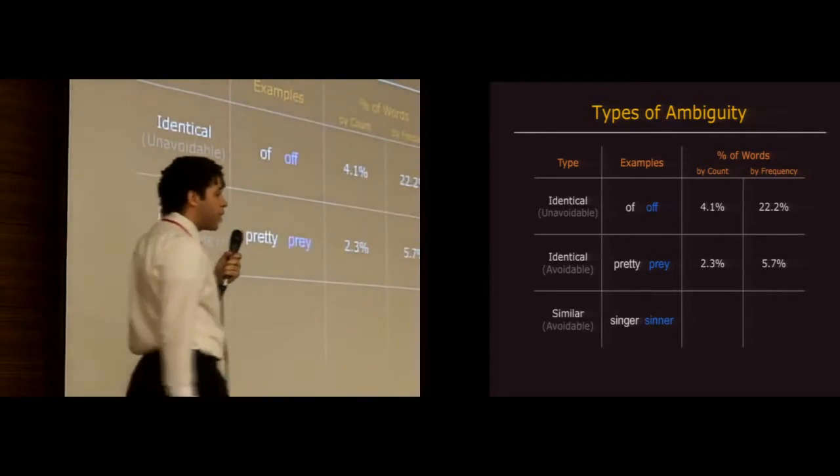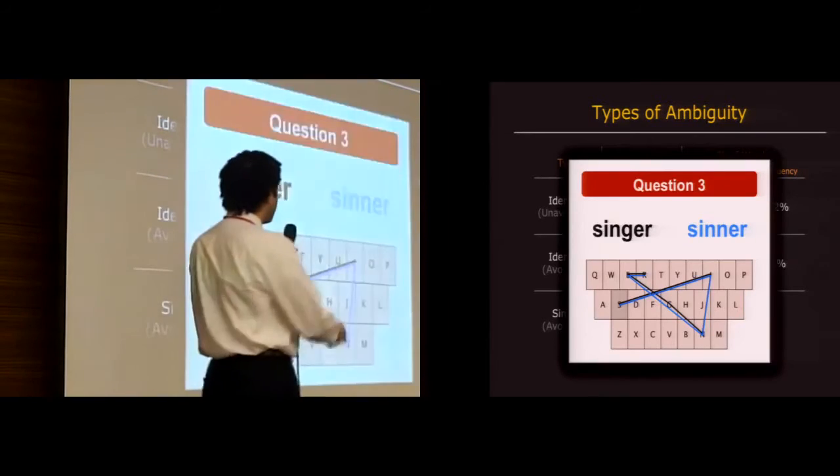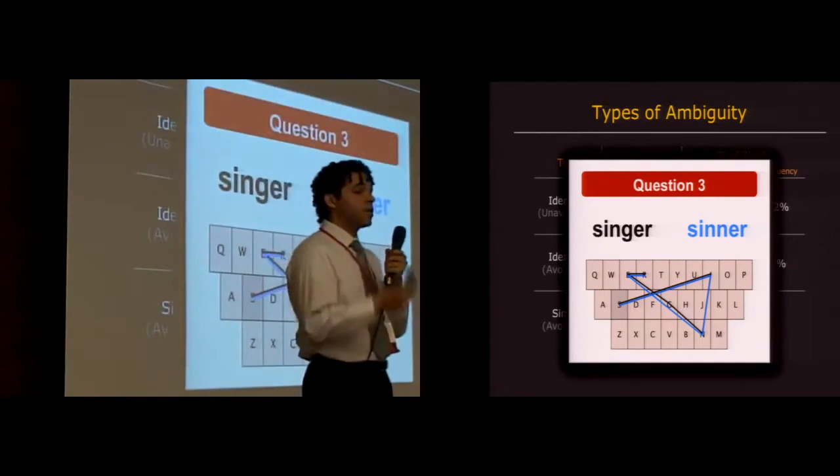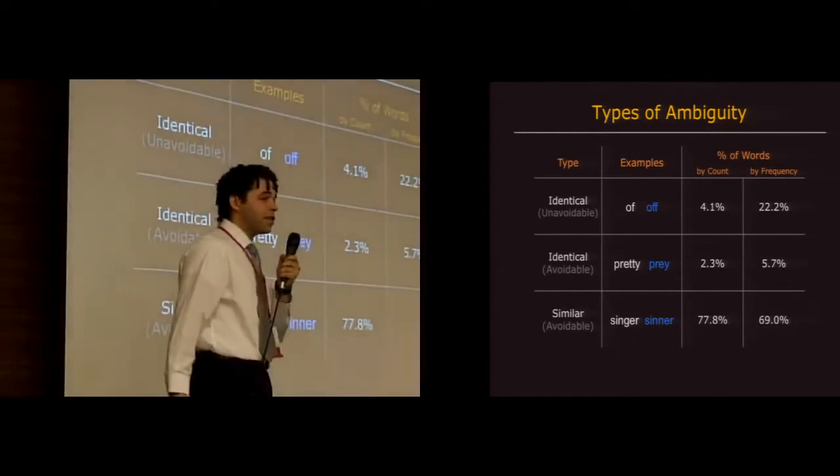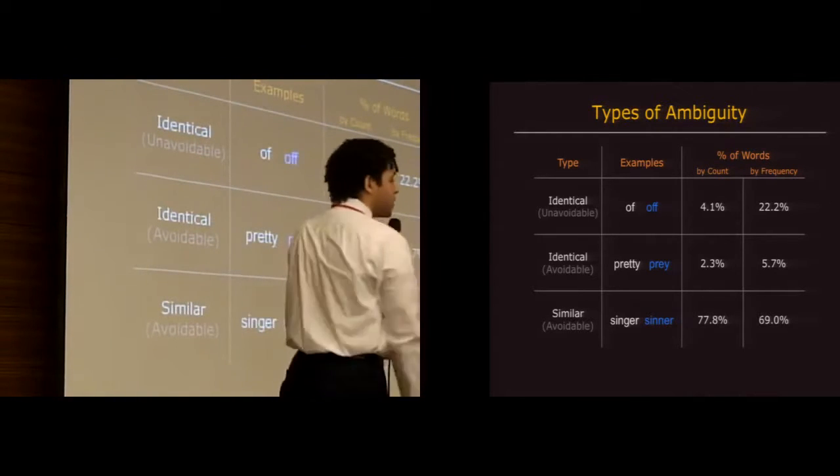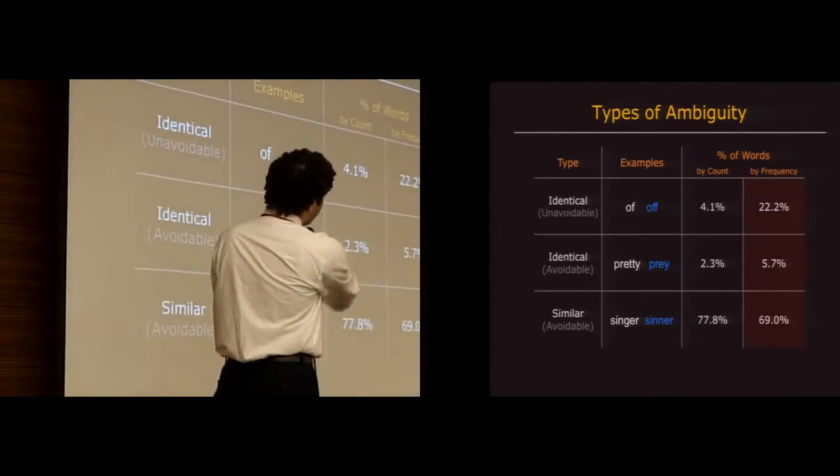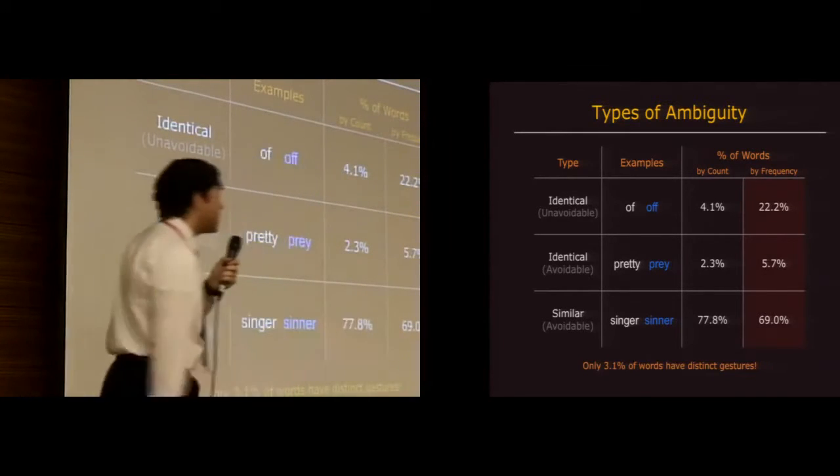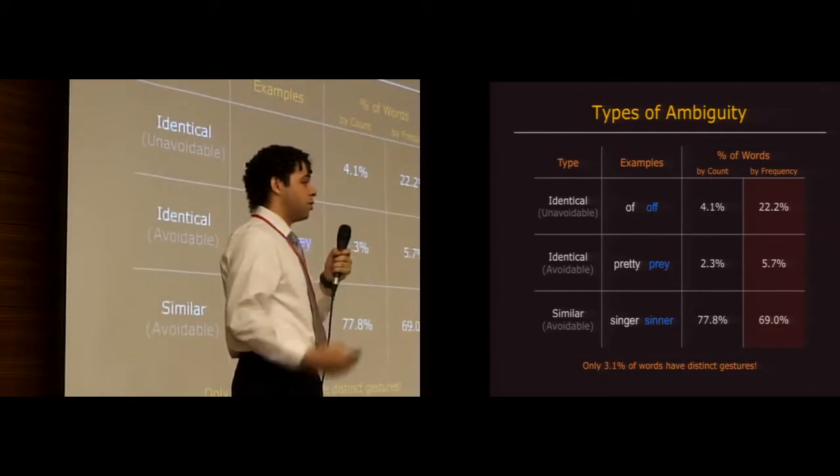And the last and most significantly by far are similar gestures, which are also avoidable. So those are words such as singer and sinner that we saw before. Not completely identical, but nonetheless very similar. So within one key width of each other on average. A whopping 78% of all words by dictionary count and 69% of words by usage frequency fall into this category. Now these categories are mutually exclusive. So if you actually sum up the values in the right column here and subtract from 100%, you'll find that only 3.1% of words in English by usage frequency actually have a distinct gesture. Which is pretty crazy.